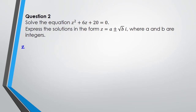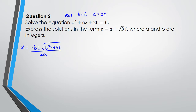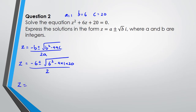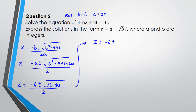So z = (-b ± √(b² - 4ac)) / 2a. Here a = 1, b = 6, c = 20. The solutions are: z = (-6 ± √(36 - 80)) / 2, which gives z = (-6 ± √(-44)) / 2.